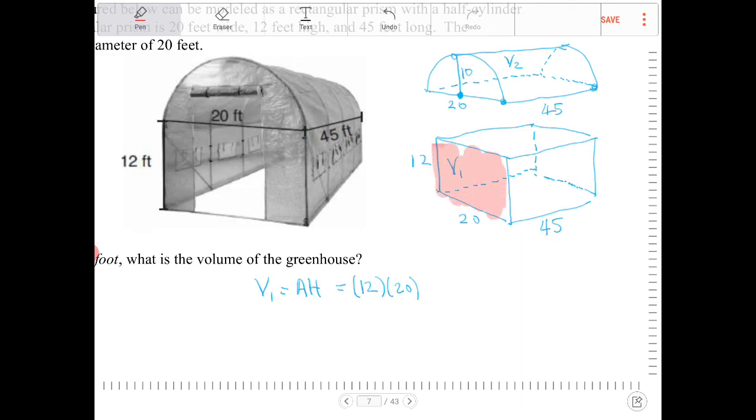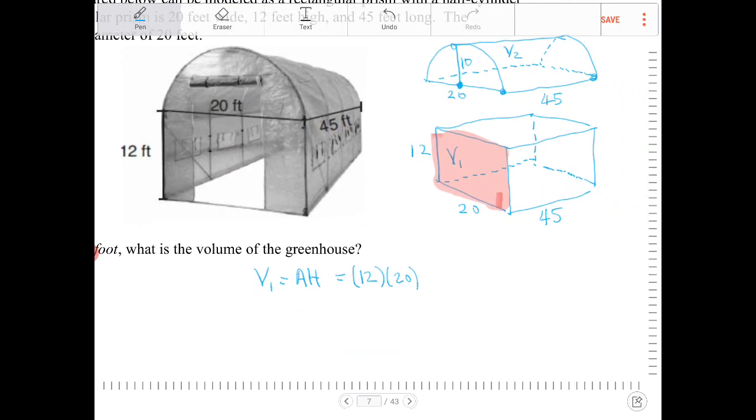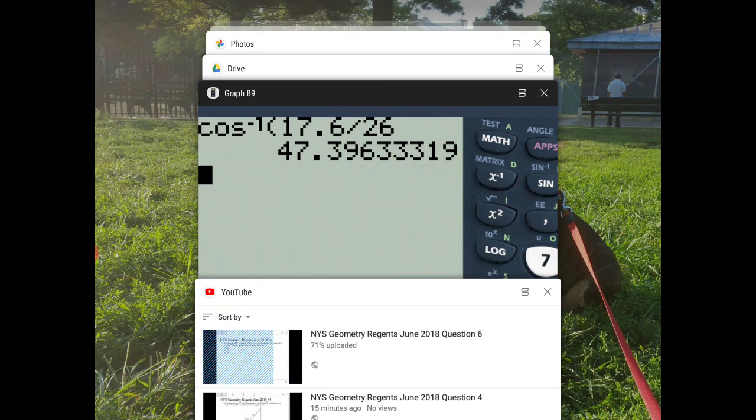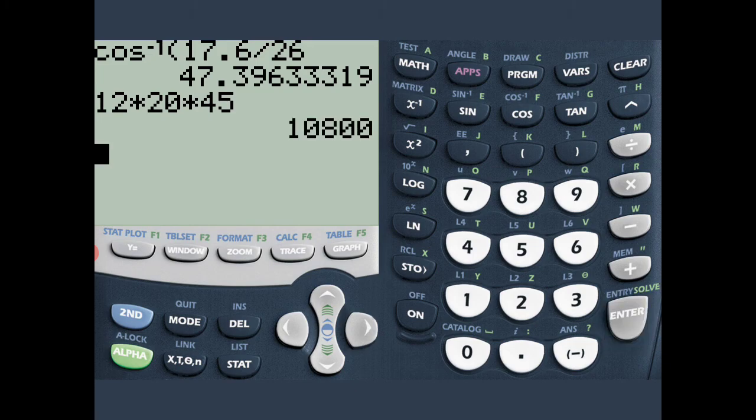That face multiplied by the lateral edge, which is going to be 45. If I punch this into the calculator, 12 times 20 times 45, that's going to be 10,800.